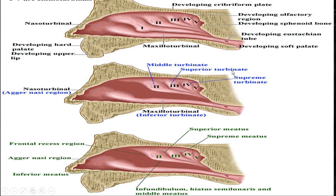The 2nd ethmoturbinal forms the middle turbinate, and the 3rd ethmoturbinal forms the superior turbinate. The 4th and 5th ethmoturbinals combine to form the supreme turbinate, which is a very rare condition. Furrows develop between the turbinates to form meati. Below the inferior turbinate is the inferior meatus, showing the opening of the nasolacrimal duct. Between the inferior and middle turbinate is the middle meatus, showing the openings of the anterior group of sinuses, i.e. the anterior ethmoid, maxillary and frontal sinuses. Between the superior and middle turbinate is the superior meatus, showing the openings of the posterior ethmoids and the sphenoids. The supreme meatus rarely shows the opening of posterior ethmoids and sphenoids in some patients.